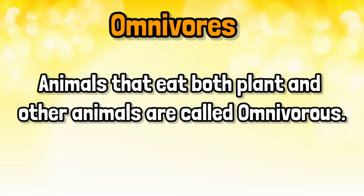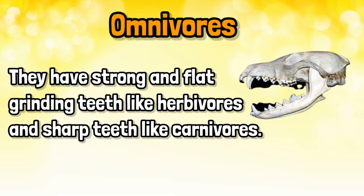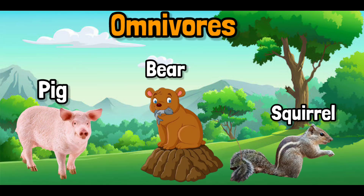Let's see Omnivores. Animals that eat both plants and other animals are called Omnivores. Omnivore animals have strong flat grinding teeth like Herbivores and sharp teeth like Carnivores. Let's see some examples of Omnivores.